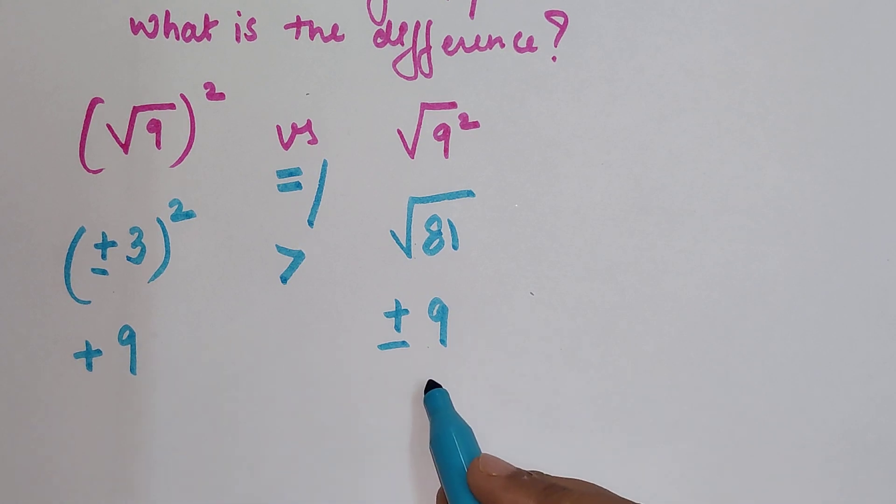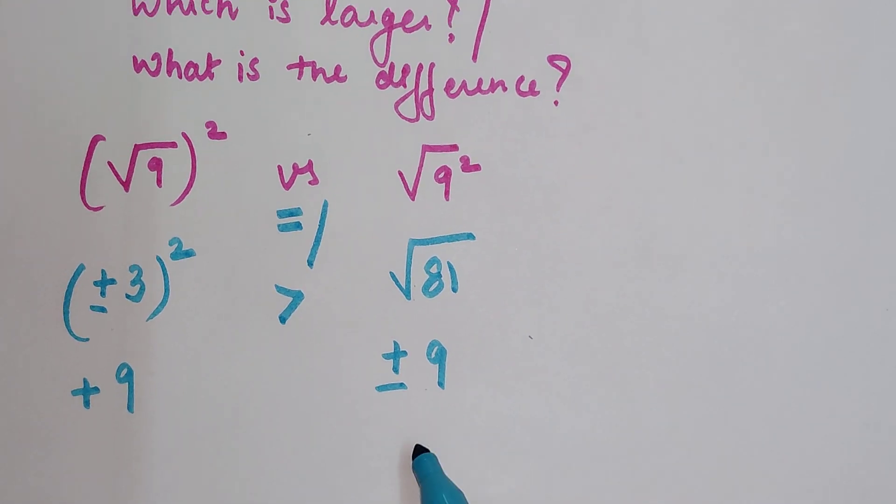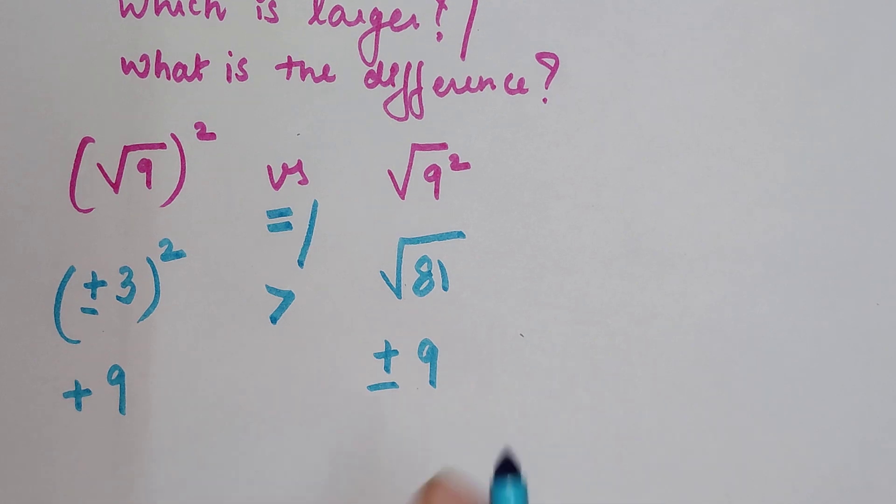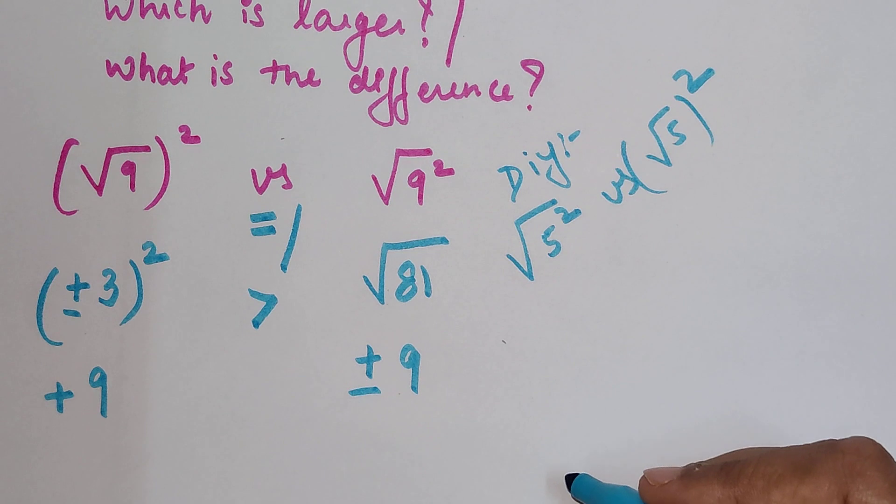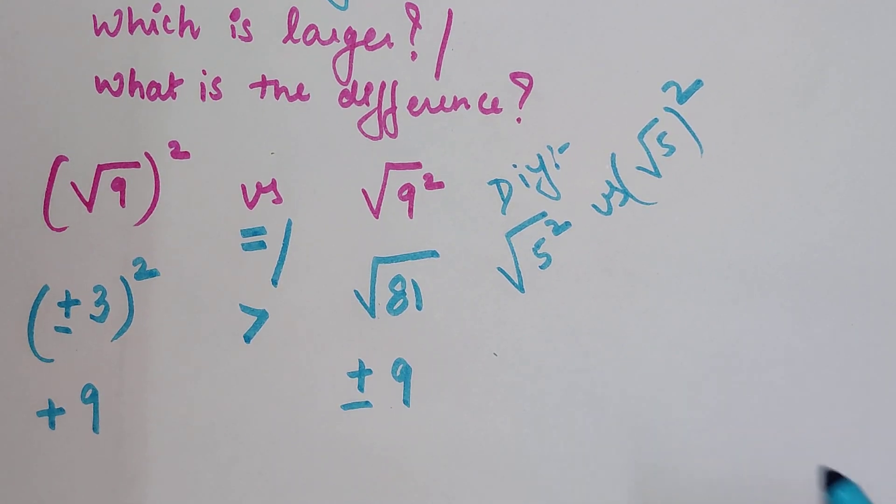Now square root of that will get you plus or minus 9. So in this scenario we can say either this is equal to or this value will be greater than this value.